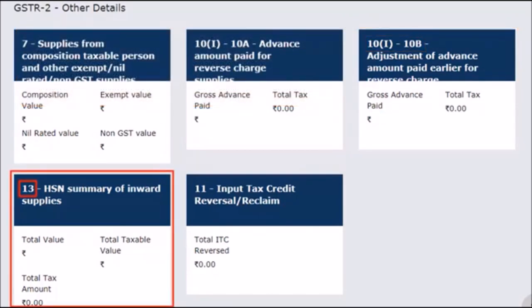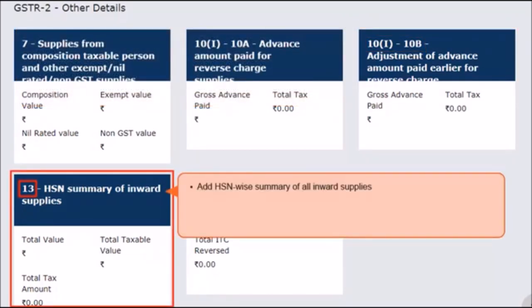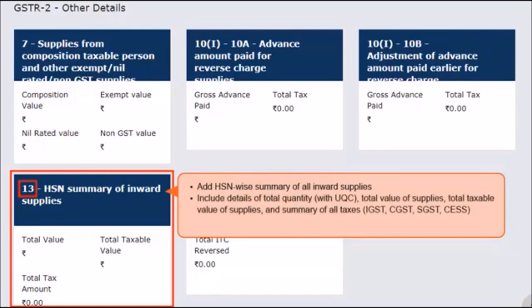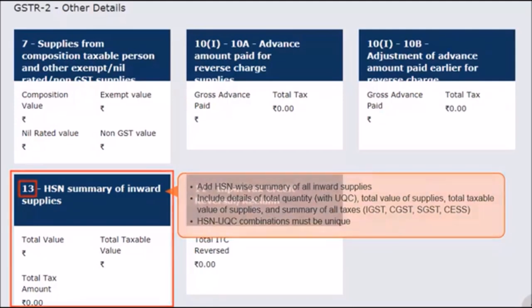In the next tile of Section 13, you need to add the HSN-wise summary of all inward supplies. This should include details of the total quantity along with unique quantity code (UQC), total value of supplies, total taxable value of supplies, and all the taxes — IGST, CGST, SGST, and CES — paid on the inward supply. Please make sure that the HSN-UQC combination is unique.